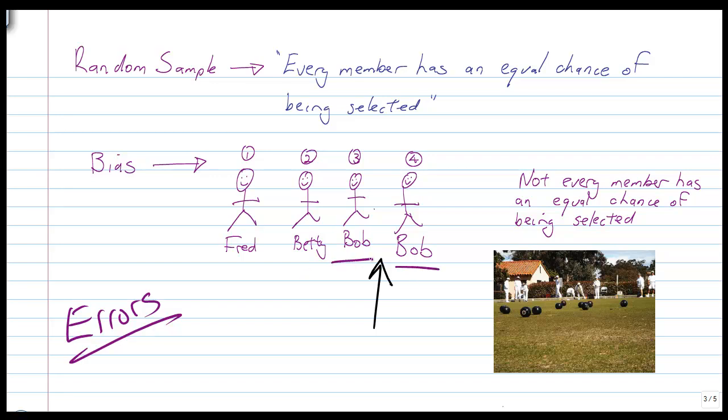If we put two Bobs, if we put Bob's name in twice into that hat when we were drawing out the numbers, then Bob's got more chance of being selected than Betty or Fred because there's two more chances that he can be selected. So, therefore, it is in his favour, so if it's biased towards him, which means that the sample that we'll get has bias in it, which means there are going to be errors there.